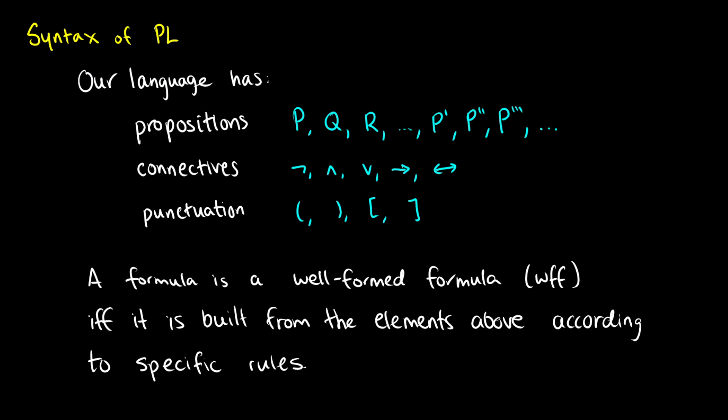In our language of propositional logic, which I will call PL in all the videos — in some textbooks you might see this as statement logic or SL, or simply truth functional logic as TFL — we have different things in our language that we allow. We allow propositions, and we give these capital letters like P, Q, R, S, T, and so on.